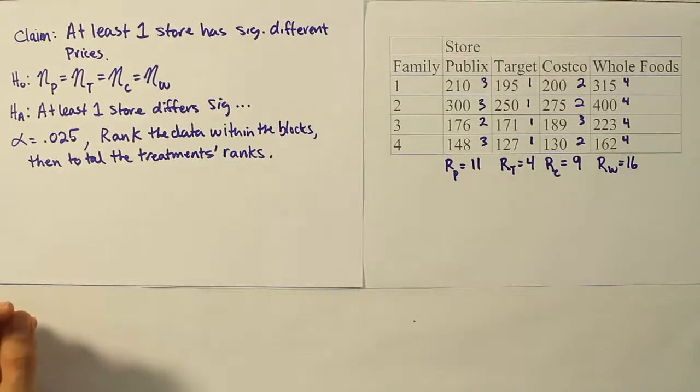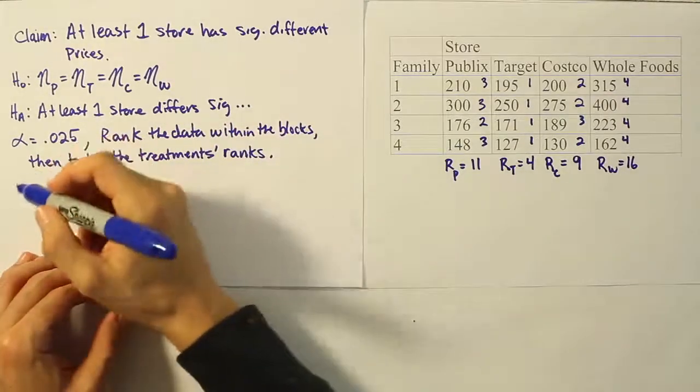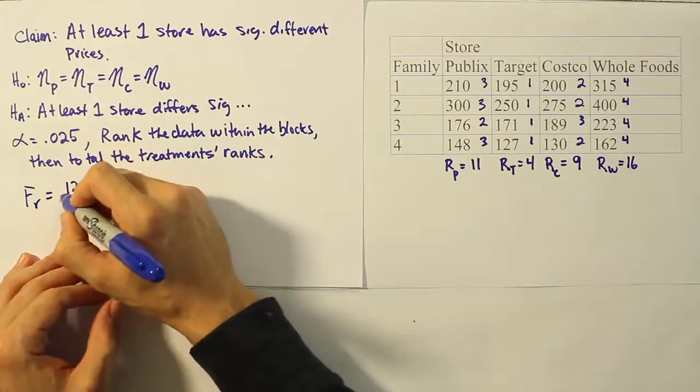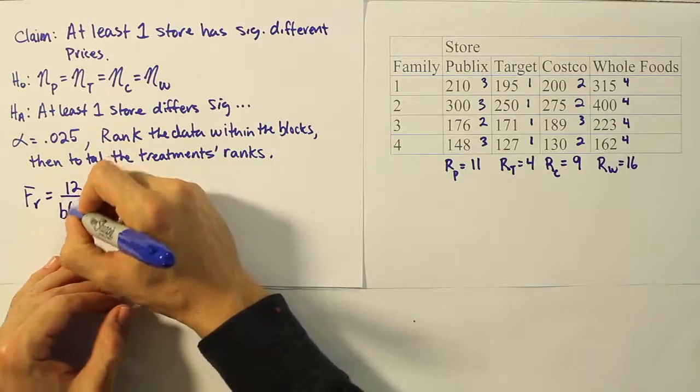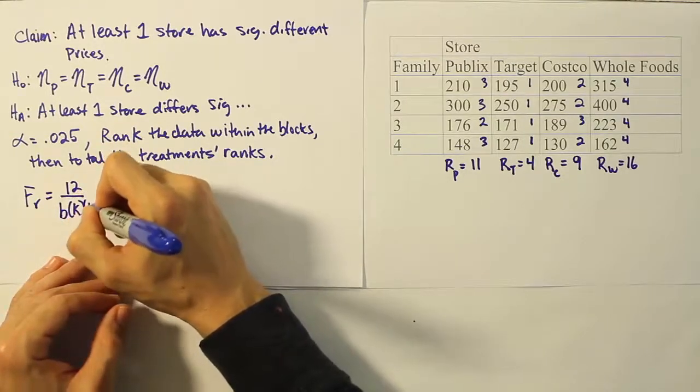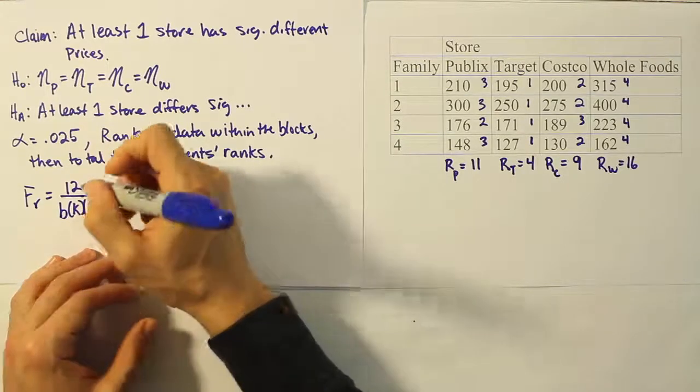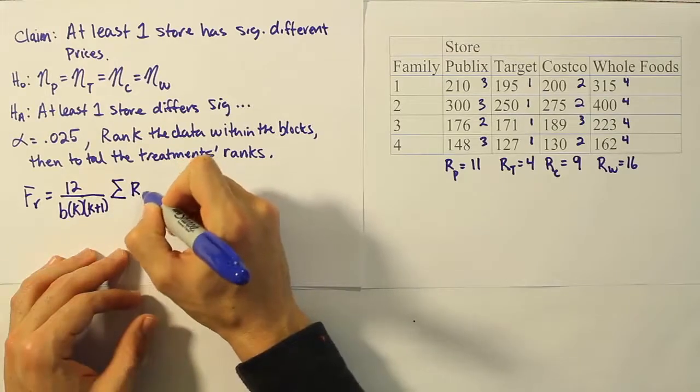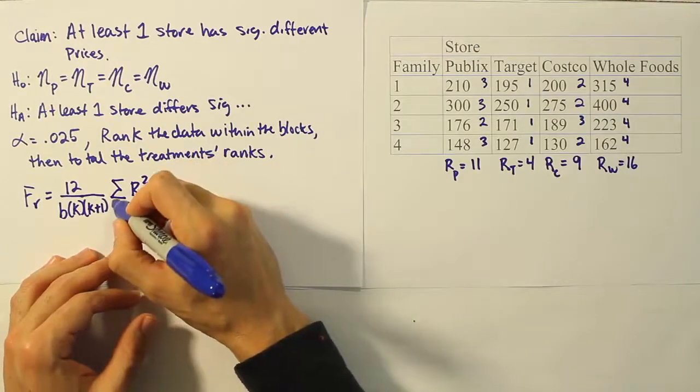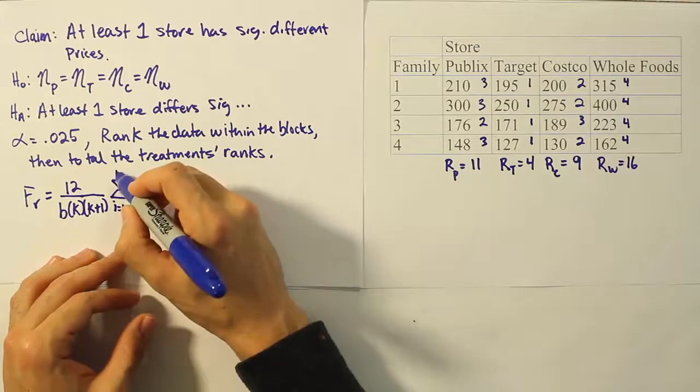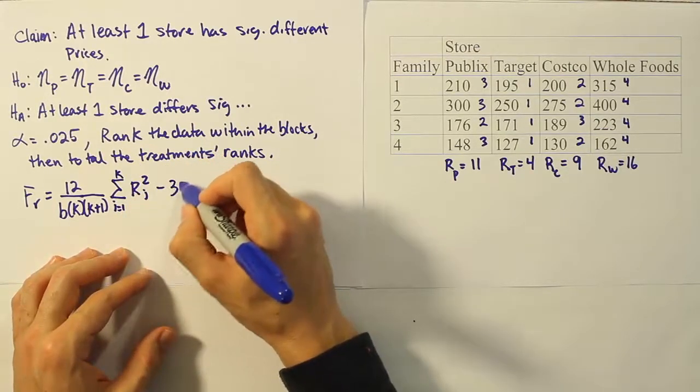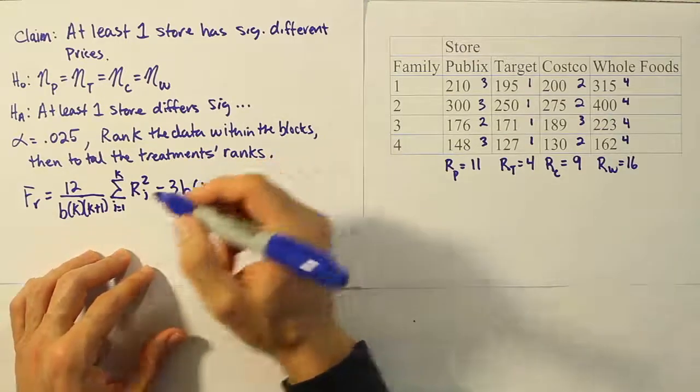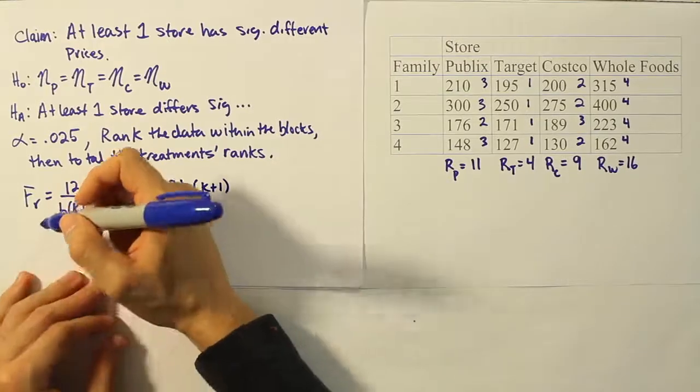When we do our test statistic, remember that the formula FR equals 12 over B times K times K plus 1. K is your number of treatments, B is your number of blocks, times the summation of the RJs squared, the rank total squared. That'll go from J equals 1 to K, minus 3 times B times K plus 1.